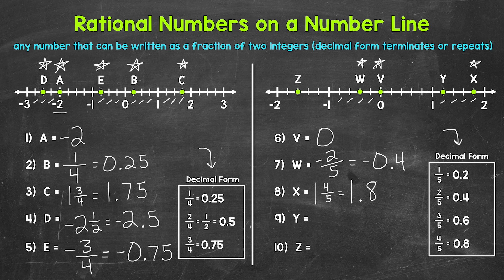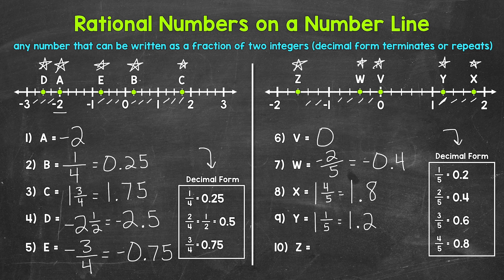For number nine, we have point Y, which is also between one and two — at one and one fifth. In decimal form, one and one fifth equals 1.2 — one and two tenths. And then lastly, point Z is between negative one and negative two: negative one and one fifth, negative one and two fifths, negative one and three fifths, negative one and four fifths. So point Z is at negative one and three fifths, which equals negative 1.6 — negative one and six tenths.